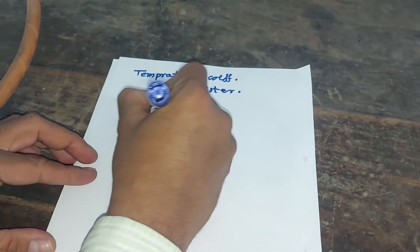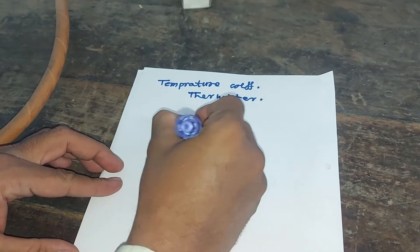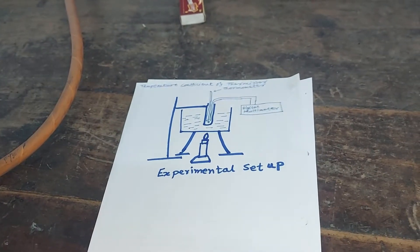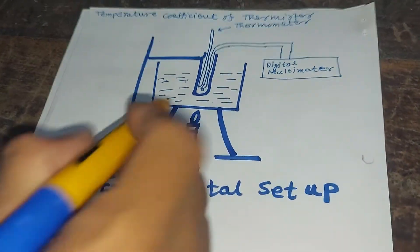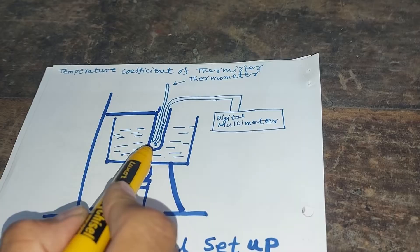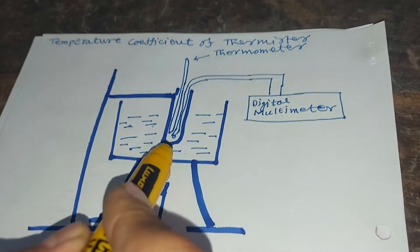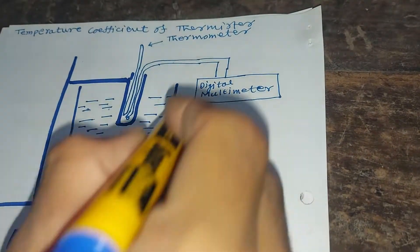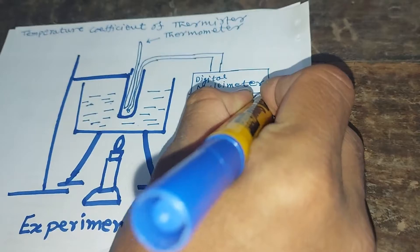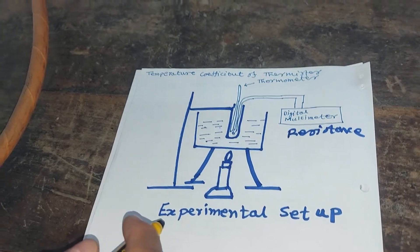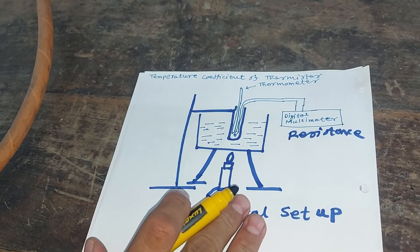The symbol we normally use is the variable temperature symbol — this is a thermistor. To carry out this experiment we have to make a simple setup. The diagram of the experimental setup is shown here. We have a test tube, and in the test tube we have a thermometer and also a thermistor. This thermistor has variable resistance and is directly connected to a digital multimeter, where we note down the resistance value. With the help of the thermometer we can note down the temperature, and there is a heating arrangement to increase the temperature.